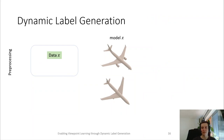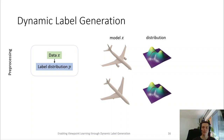So again, let's consider the two rather similar input models. Now, instead of selecting a single label, we consider the entire label distributions, which in our case are the viewpoint quality distributions. Now, we pair the data with the distributions and pass them to the training routine.